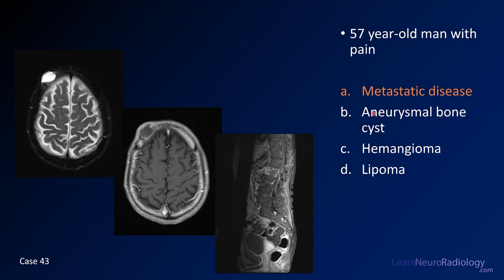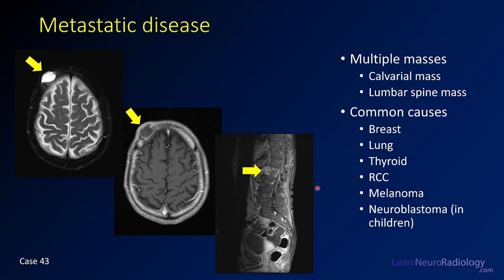This is a case of metastatic disease. The fact that you have spine imaging along with head imaging was a clue. What you have is a T2 hyperintense lesion in the anterior calvarium with a little peripheral enhancement and nodularity, plus bone destruction. It's not a lipoma because it doesn't suppress on fat-suppressed imaging. In conjunction with a mass in the lumbar spine vertebral body, you have to be thinking about metastatic disease.